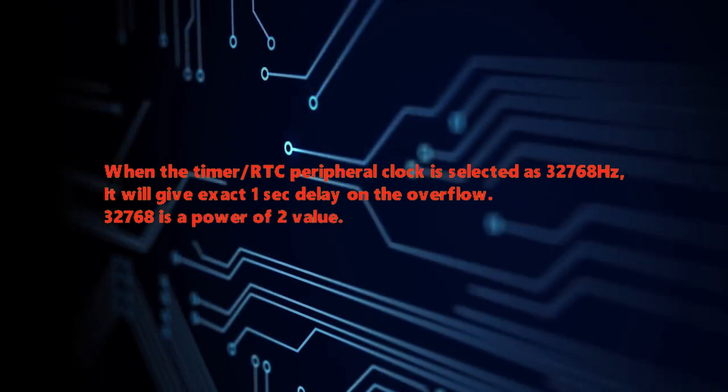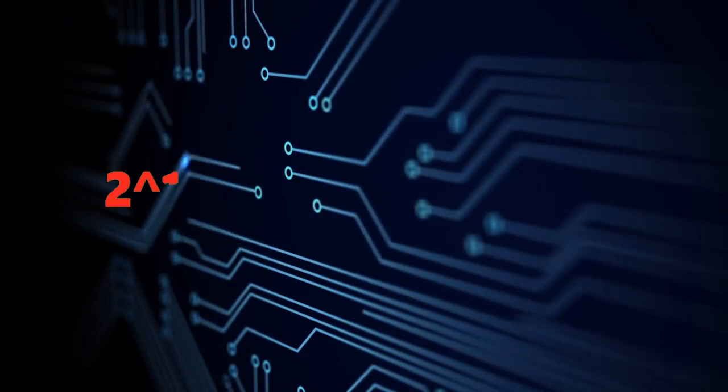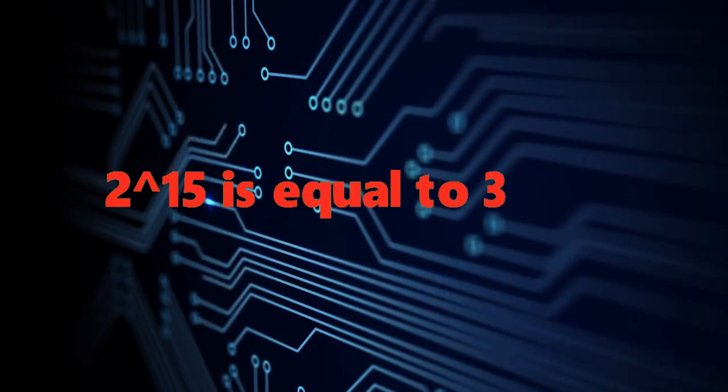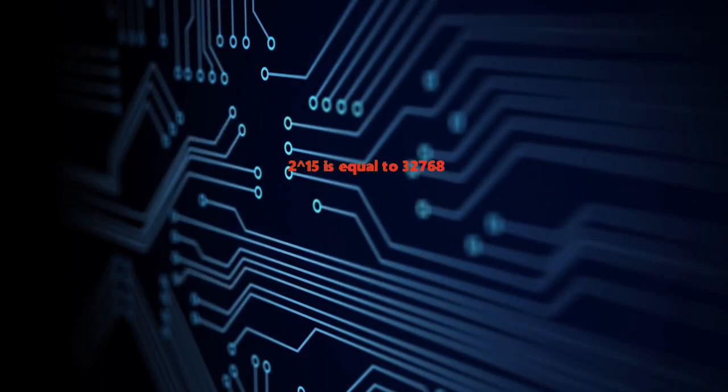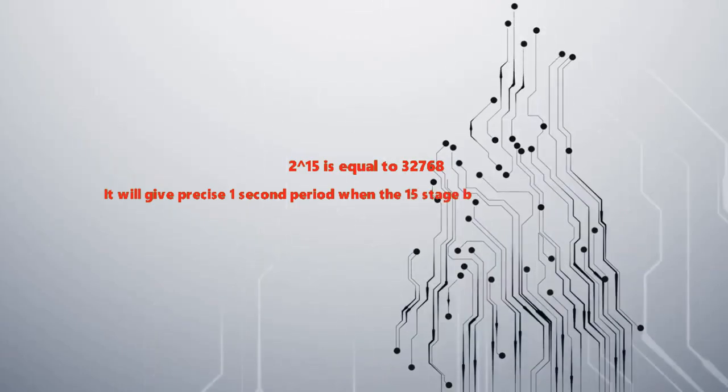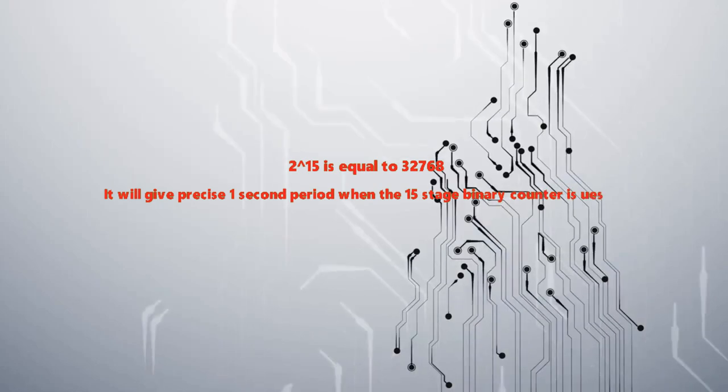32768 is power of 2. Yes, 2 power 15 is equal to 32768. It will give a precise one second period when the 15 stage binary counter is used.